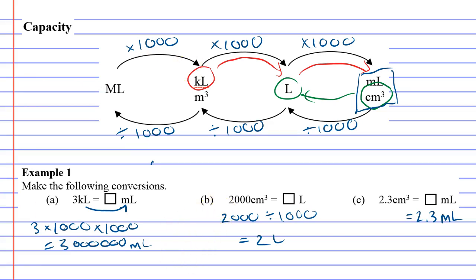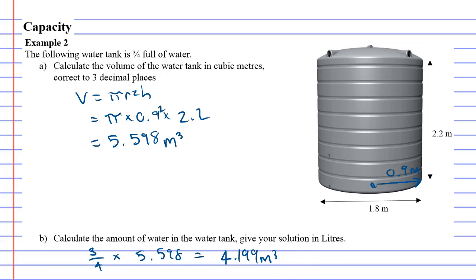We'll do this one in blue. If it's metres cubed and I want to go to litres, it tells me to times by a thousand. Alright, let's do that now. So, 4.199 times 1,000 equals 4,199 litres that is in this tank.